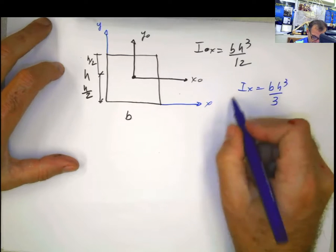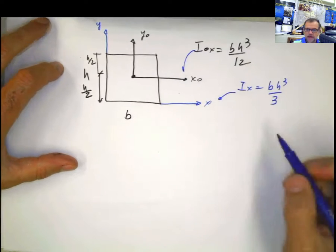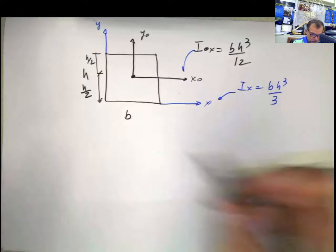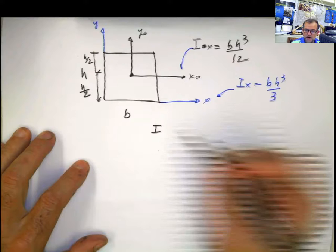Now, this is with respect to the base, this is with respect to the centroid. Now, what if you want to convert one into the other one? So you just have to apply the Steiner theorem, or parallel axis theorem.